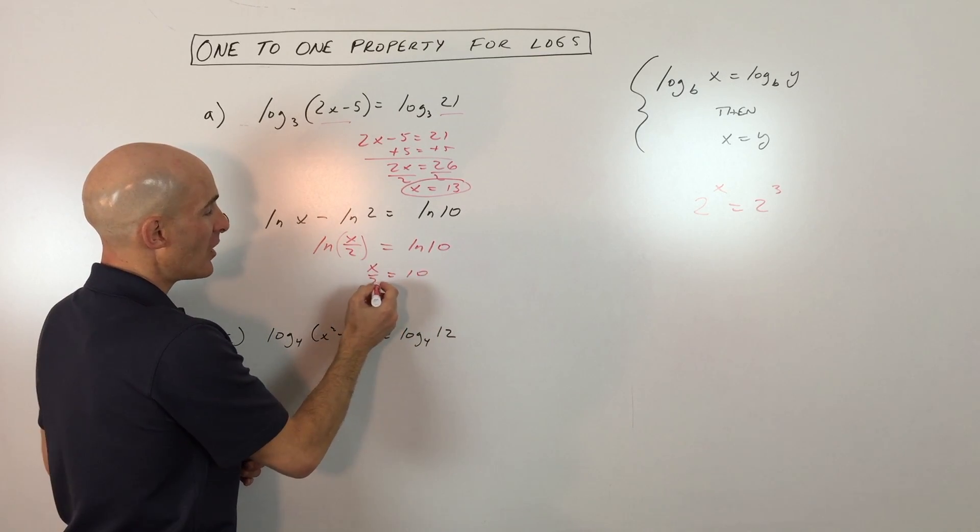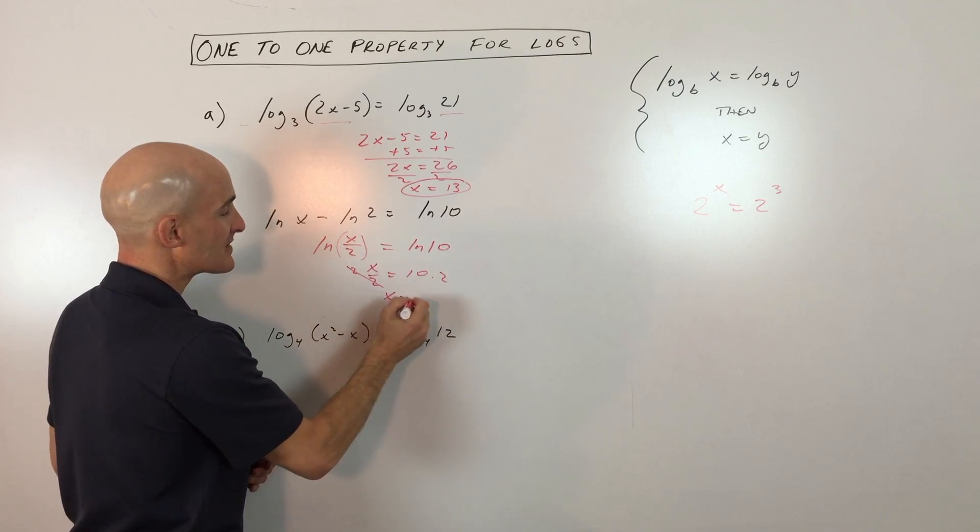So x divided by 2 equals 10. We can multiply both sides by 2, and you can see that x equals 20.